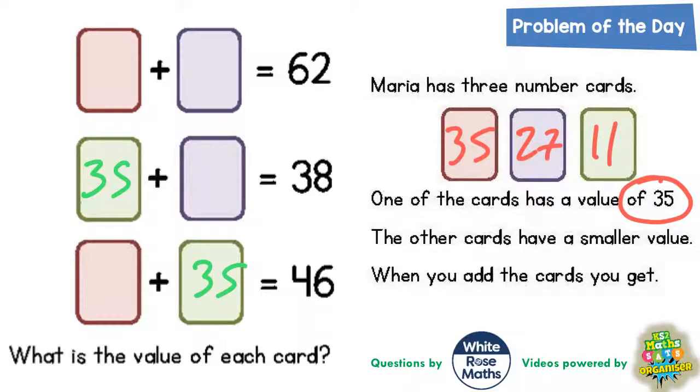Well if the green card is worth 35, the purple card would have to be worth 3, because 35 plus 3 is 38. And if you make this purple card worth 3 as well on the top, then this red card would have to be worth 59, because 59 plus 3 makes 62.